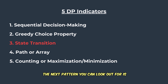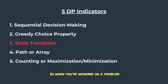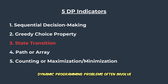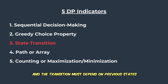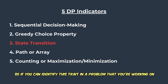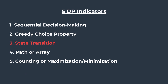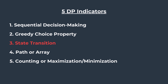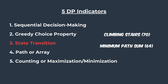The next pattern to look out for is state transition. Dynamic programming problems often involve transitioning from one state to the next, and the transition must depend on previous states. If you can identify this trait in a problem you're working on, that's also a good indicator. Some examples of this are the Climbing Stairs and Minimum Path Sum problems.